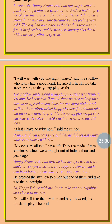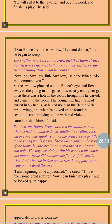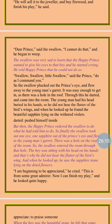'Dear prince,' said the swallow, 'I cannot do that,' and he began to weep. At this the swallow said he could not do this thing. 'Swallow, swallow, little swallow,' said the prince, 'do as I command you.' The Happy Prince said he had to obey his instructions. So the swallow plucked out the prince's eye and flew away to the young man's garret. Again the swallow bird agreed to the instructions of the Happy Prince and got ready to help the young man. It was easy enough to get in as there was a hole in the roof.